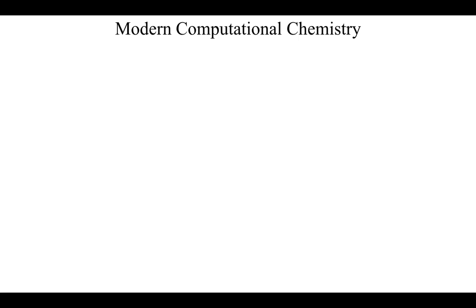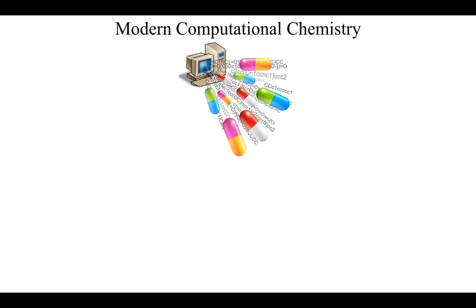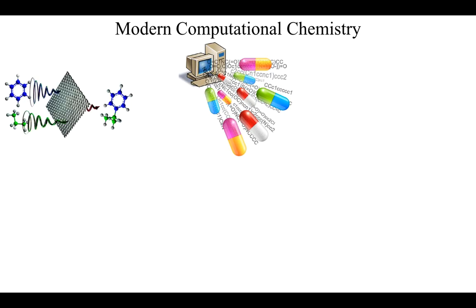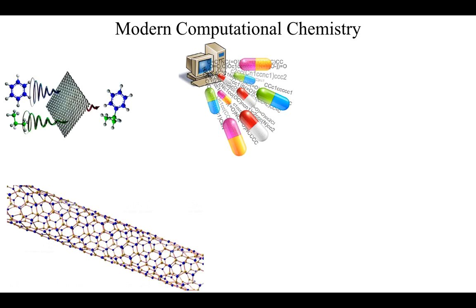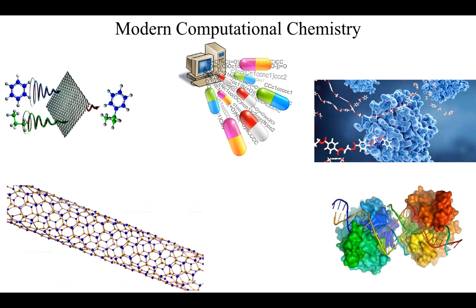Nowadays, modern computational chemistry is helping scientists to predict molecular structures of materials using accurate quantum chemical methods. This can be used in different areas, including drug design and discovery, catalysis, nanomaterials design, protein folding, and many more.